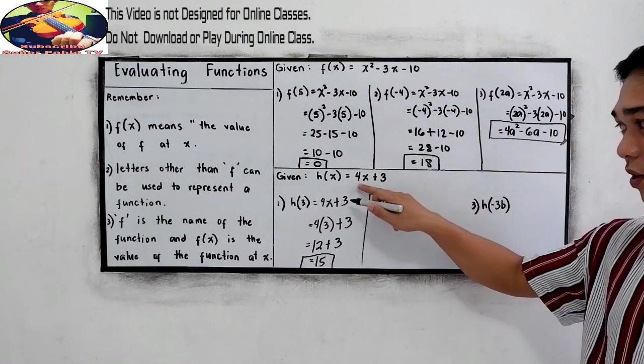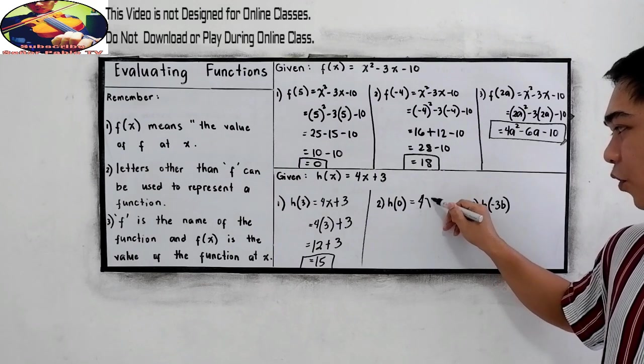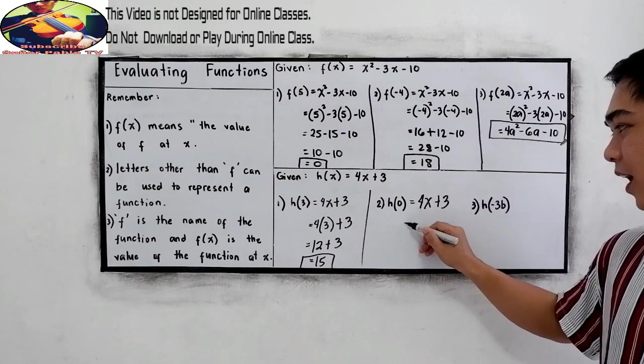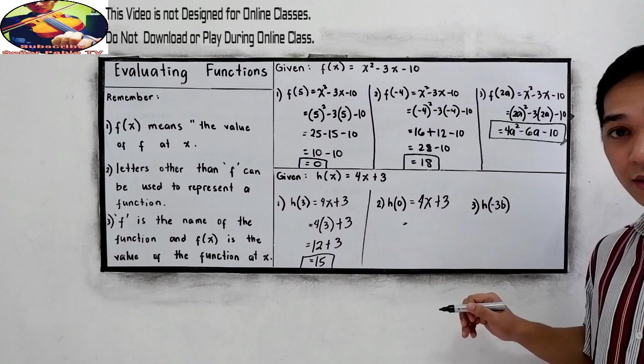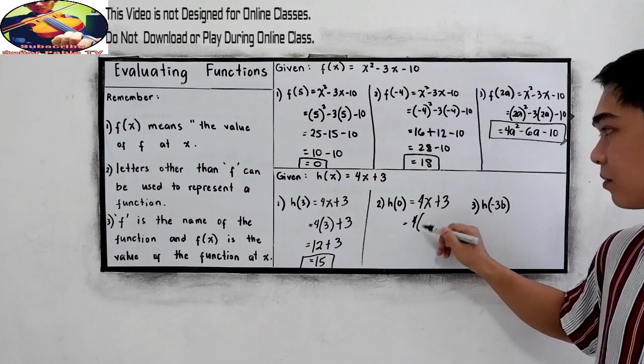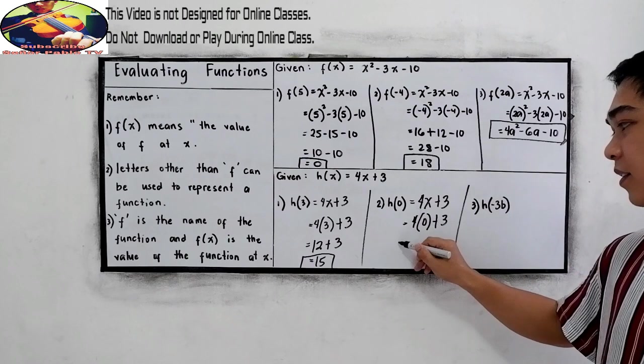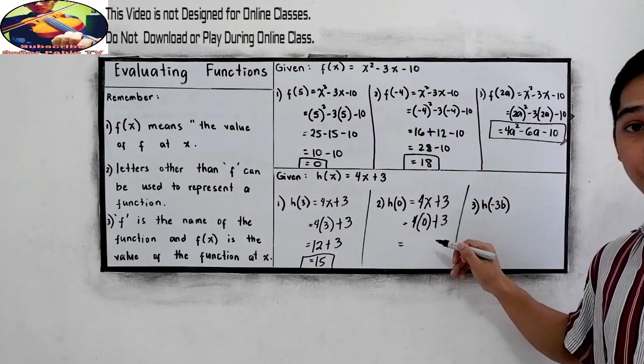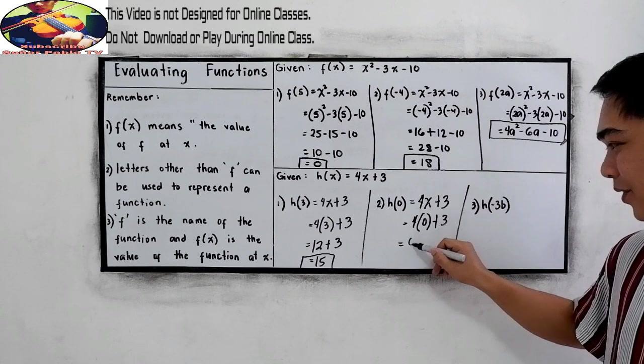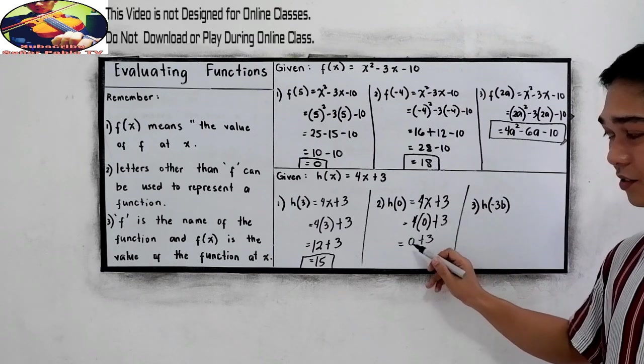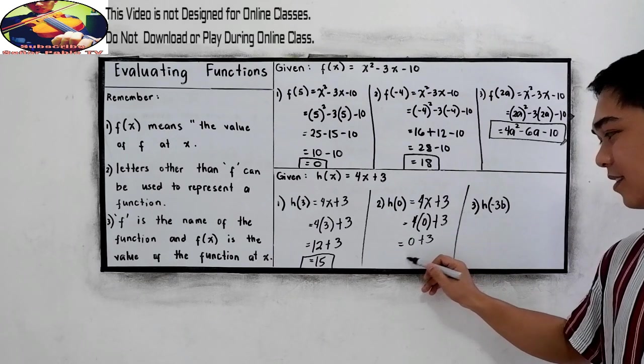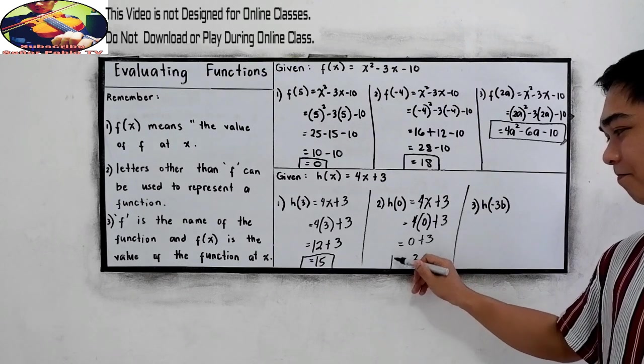And number 2, h(0). So, copy the given: 4x plus 3. And now, substitute. 4 times x is 0, plus 3. 4 times 0, that is 0, plus 3. 0 plus 3 is equal to 3.